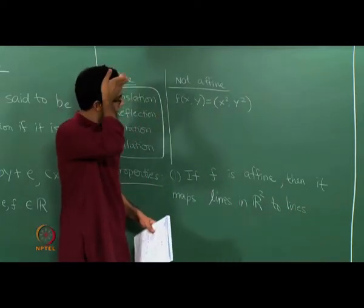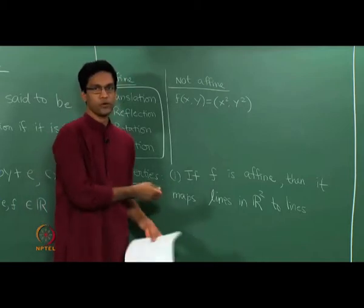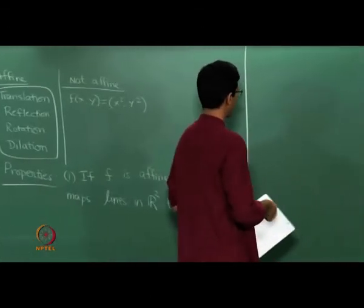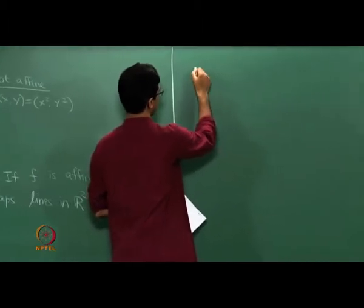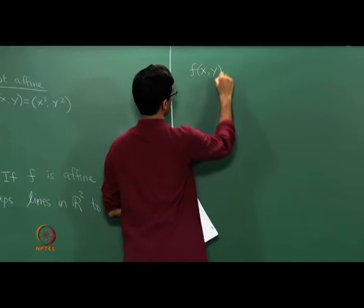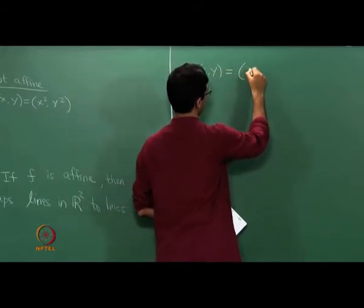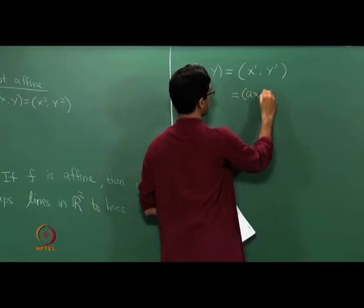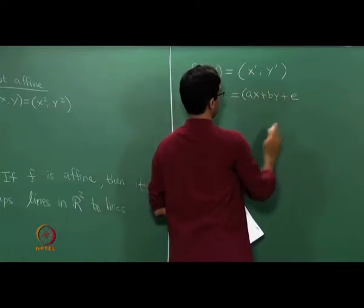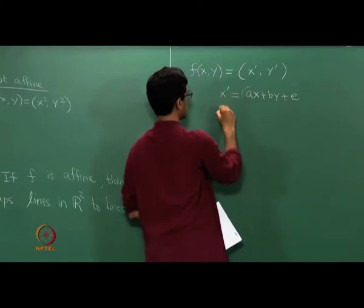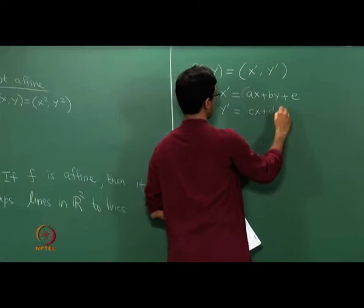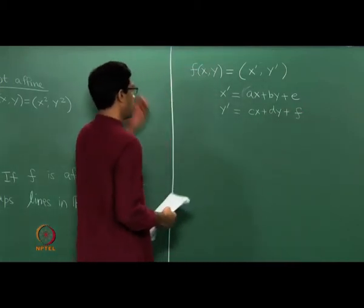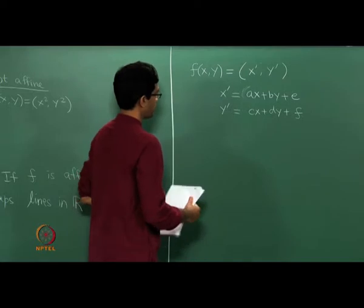Lines on the plane map back to lines on the plane. Let us actually do this computation in general. Let us prove that an affine transformation maps lines to lines. Assume f of (x, y) has the given affine form. Let us call the two components x′ and y′, as we were doing in all the examples. So x′ = ax + by + e and y′ = cx + dy + f. We need to show that lines map to lines.